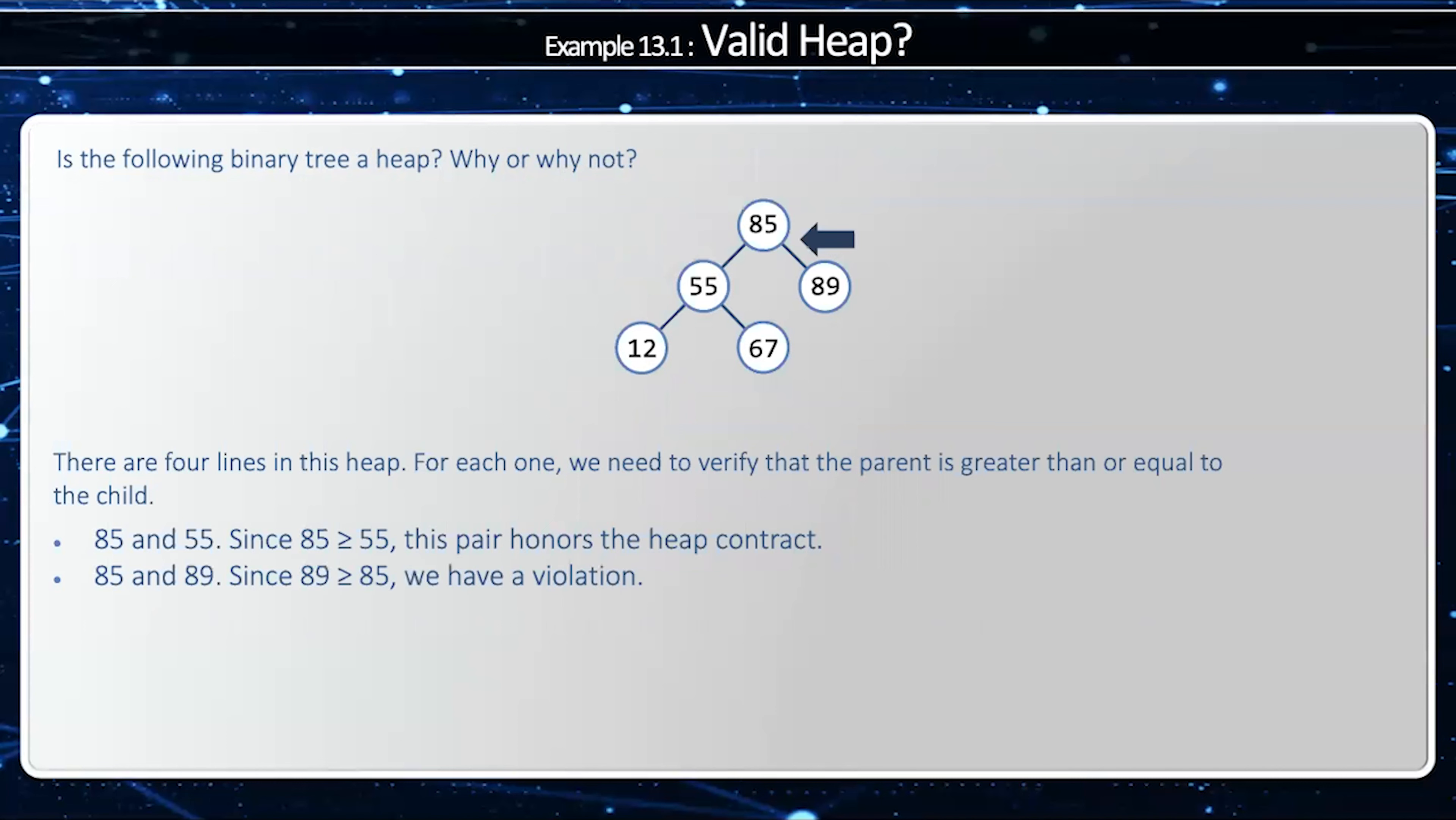Between 85 and 89, note that 89 is actually greater than 85. Therefore, the heap constraint is not honored. Between 55 and 12, 55 is greater than or equal to 12, so the heap constraint is honored.